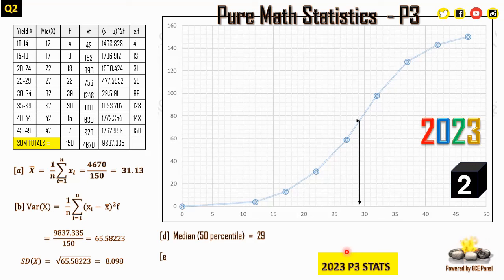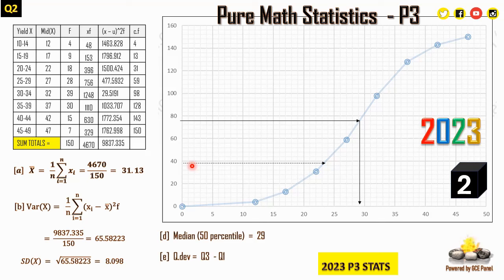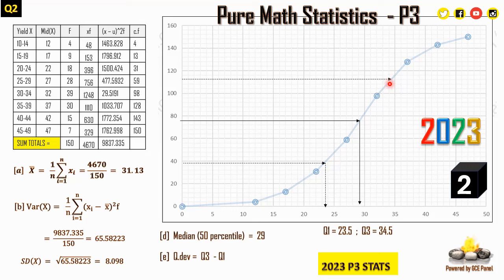For the quartile deviation, Q1 is at position 150/4 = 37.5, giving Q1 ≈ 23.5. Q3 is at position 3×150/4 = 112.5, giving Q3 ≈ 34.5. Quartile deviation = Q3 − Q1 = 34.5 − 23.5 = 11.0.